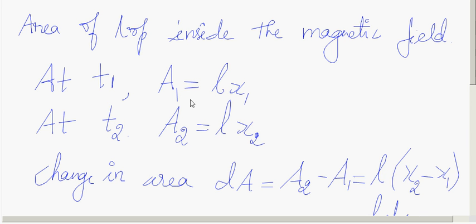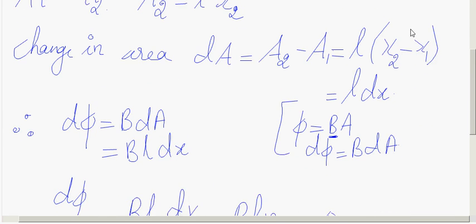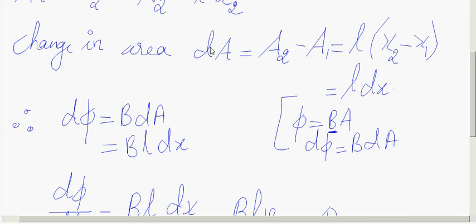The area at T1 is L × X1 and at T2 is L × X2. The change in area swept is A2 − A1 = L · DX. Due to this change in area, there is a change in flux.